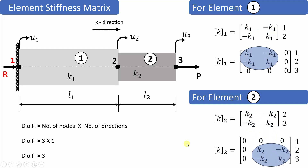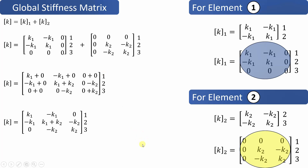For element 1, between nodes 1 and 2, the element stiffness matrix is [k1, -k1; -k1, k1] for nodes 1 and 2. Since the total degrees of freedom are 3, it must be a 3×3 matrix, so all entries in the third row and third column are zero. For element 2, between nodes 2 and 3 with stiffness k2, the element stiffness matrix is [k2, -k2; -k2, k2] for nodes 2 and 3, with the first row and first column all zeros.